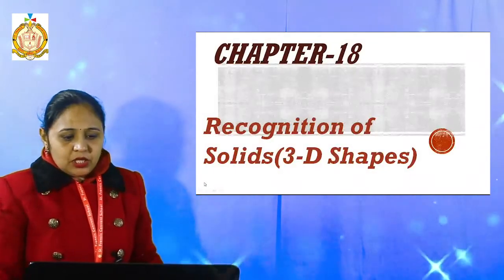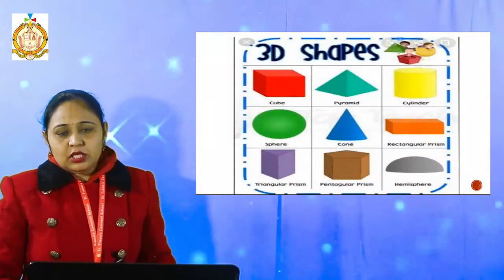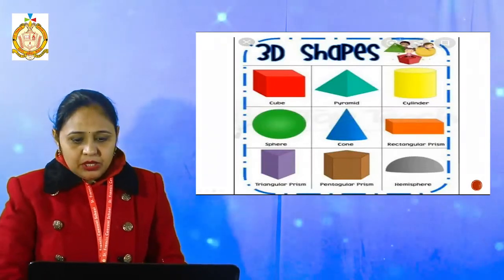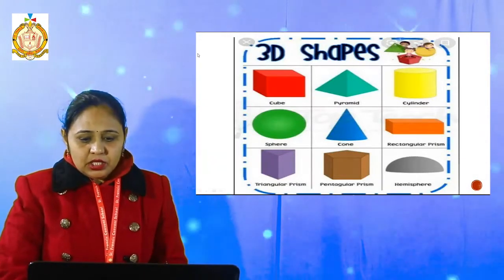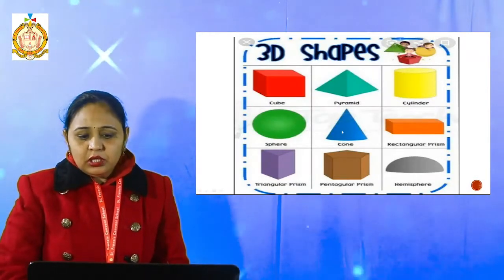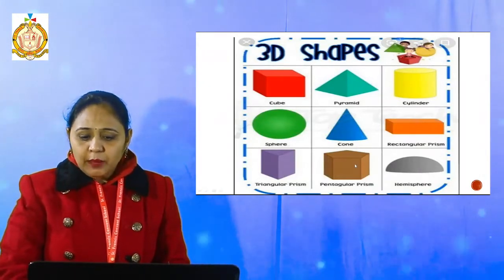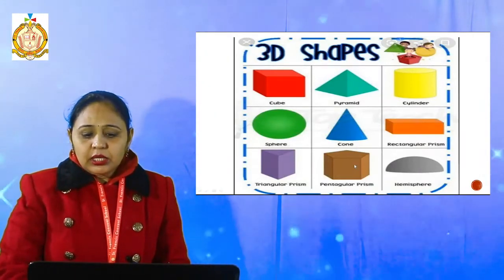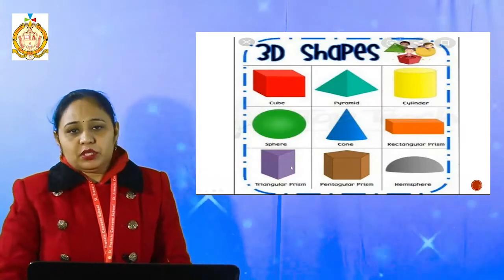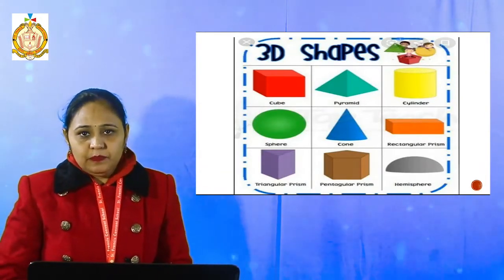Now those shapes are: cube, pyramid, cylinder, sphere, cone, rectangular prism, hemisphere, pentagonal prism, and triangular prism. Now these are the shapes we have to deal with.